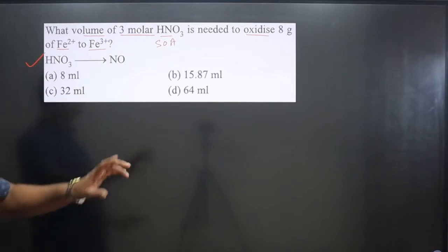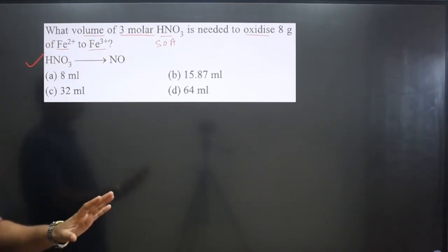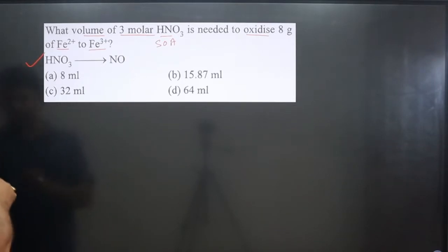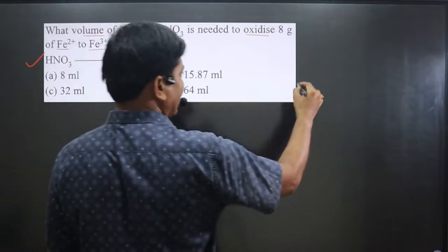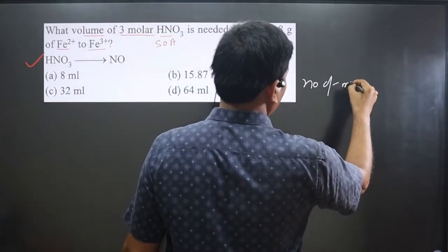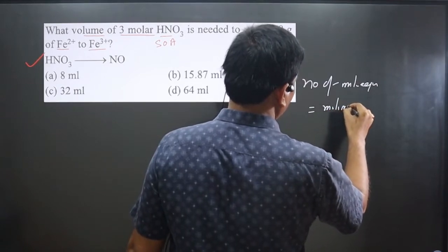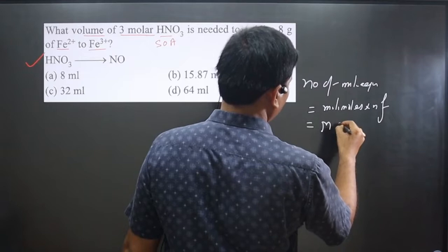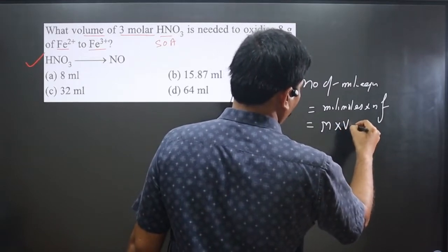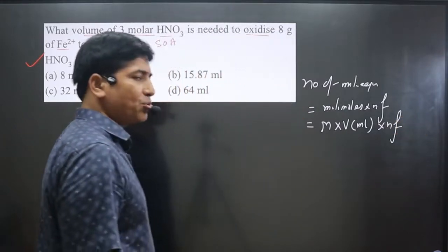Two substances are involved: HNO₃ as well as Fe²⁺. Then we can equate the number of milliequivalents. We have the formula: number of milliequivalents is equal to milliemoles multiplied by n-factor, which equals molarity multiplied by volume in mL multiplied by n-factor. It means we need to calculate n-factors.